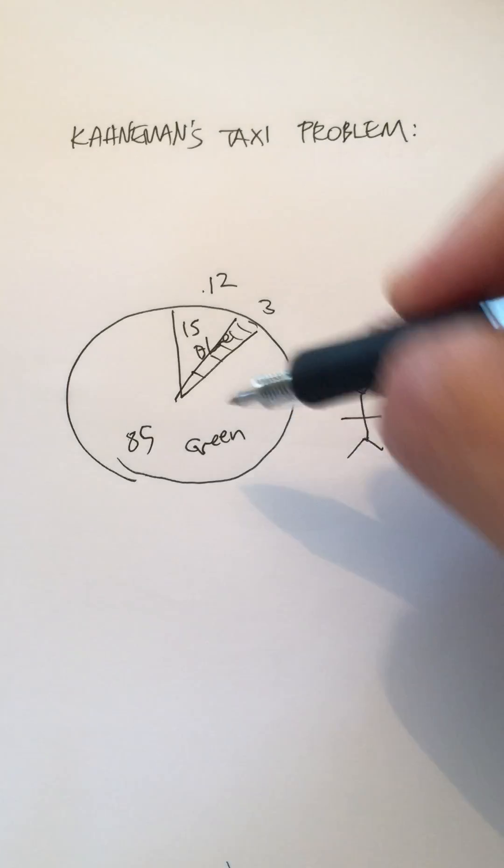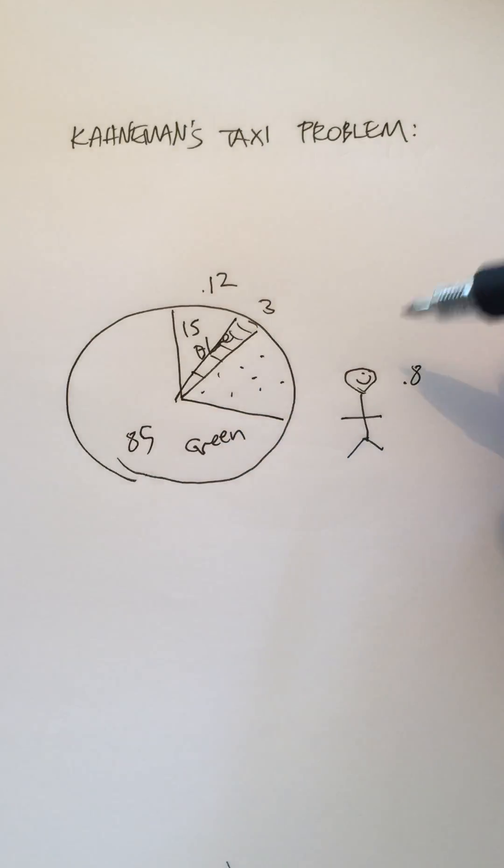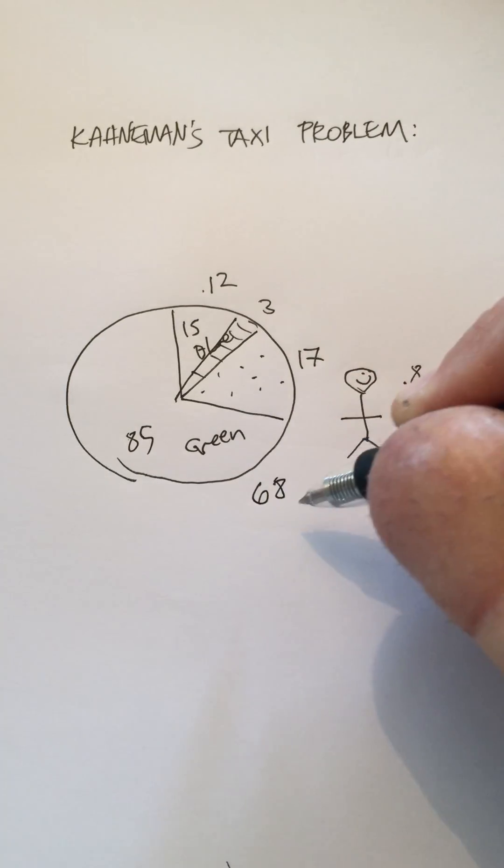The same thing when he looks at the green taxis, he'll get 20% wrong, which means he will get 17% wrong and 68% right.